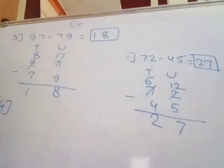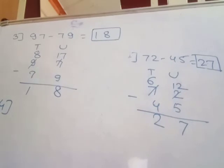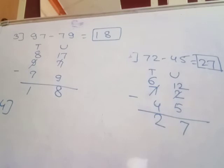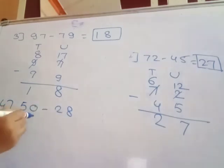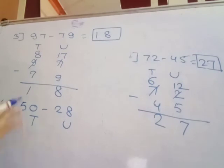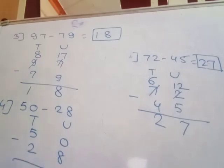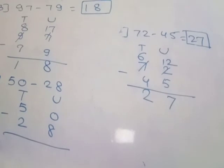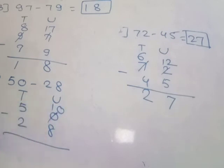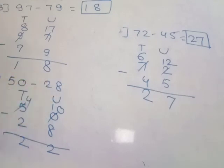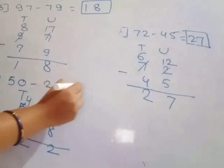Fourth example: 50 minus 28. Write the unit place and tens place vertically: 50 on top, 28 below. The unit digit is 0, so borrow 1 from the tens place, making it 10. 10 minus 8 equals 2. Then tens digit becomes one less: 4 minus 2 equals 2. The answer is 22.